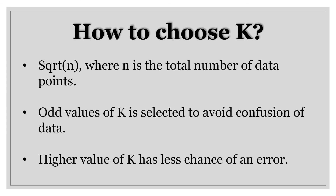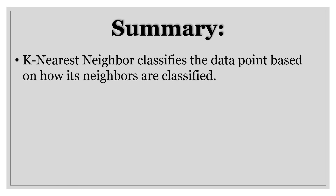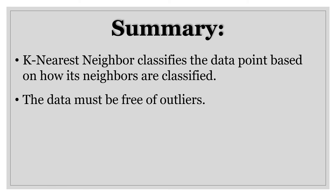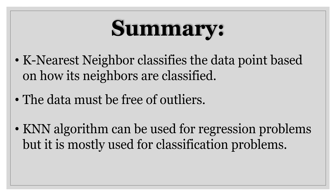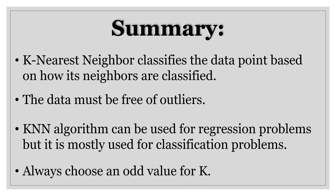Let us summarize what we have learned in K nearest neighbor. KNN classifies the data points based on how its neighbors are classified. The data points must be free of outliers. KNN algorithm can be used for regression problems, but it is mostly used for classification problems. You should always remember to choose an odd value for K. Thank you — this is the end of the presentation. I hope you've understood what is least square method and K nearest neighbor method.